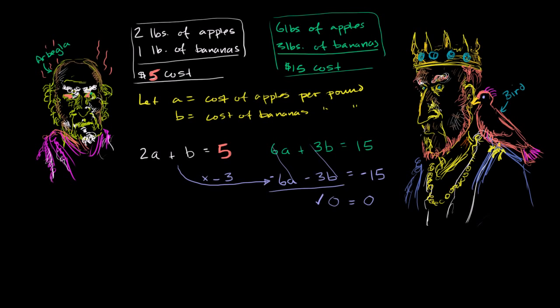And so then the bird whispers in the king's ear. And then the king says, well, the bird says you should graph it to figure out what's actually going on. And so you've learned that listening to the bird actually makes a lot of sense. So you try to graph these two constraints. So let's do it the same way. We'll have a b-axis. That's our b-axis. And we will have our a-axis.